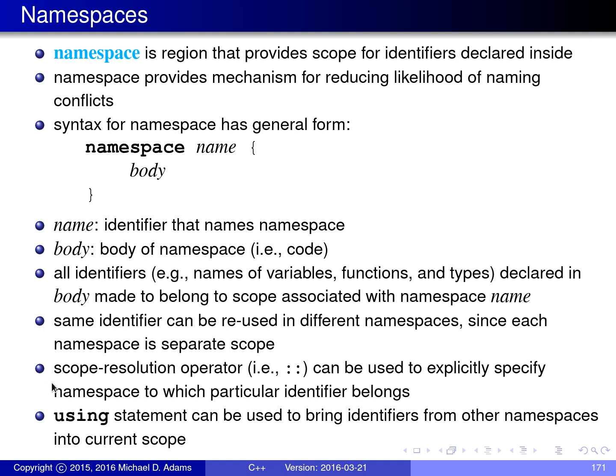A few other things about namespaces: the scope resolution operator — which we've seen before, the colon-colon operator — can be used to explicitly specify the namespace to which a particular identifier belongs. You can prefix an identifier with a namespace name followed by colon-colon to refer to an identifier in that namespace. The using statement can also be used to bring identifiers from other namespaces into the current scope, as will be made clearer by an example.